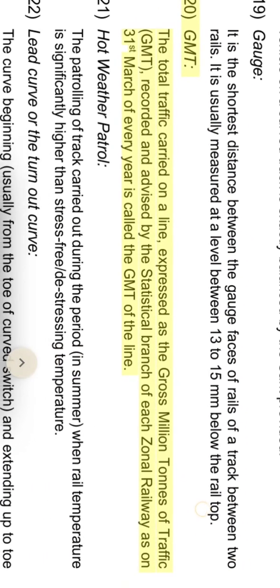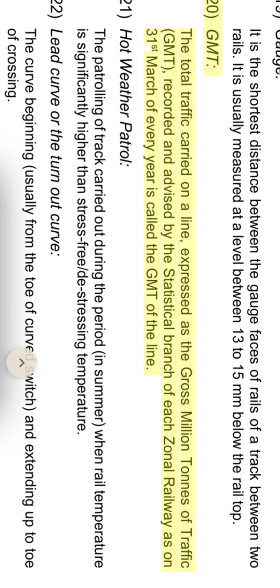GMT: the total traffic carried on a line, expressed as the gross million tons of traffic. GMT recorded and advised by the statistical branch of each zonal railway on the 31st of March of every year is called the GMT of the line.